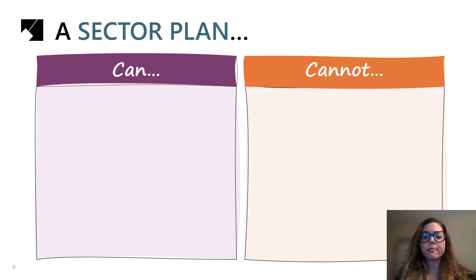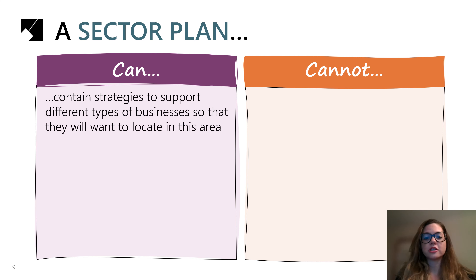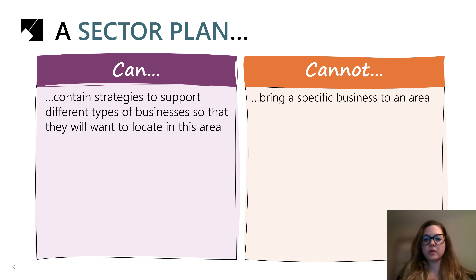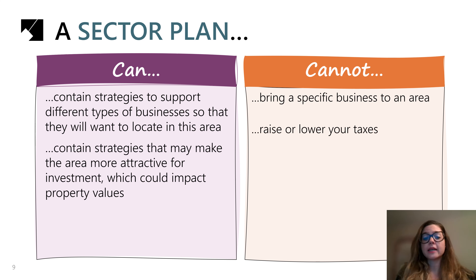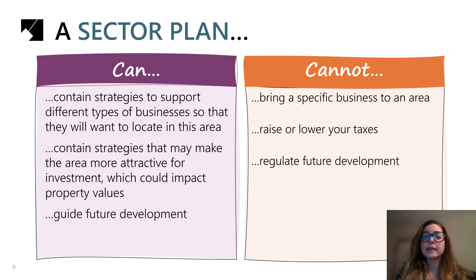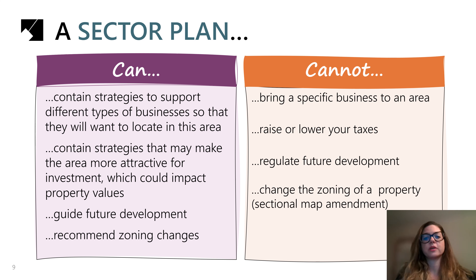A sector plan can contain strategies to support different types of businesses so that they'll want to locate in this area, but it cannot bring a specific business to an area. A sector plan can contain strategies that may make the area more attractive for investment, which could impact property values, but it cannot raise or lower your taxes. A sector plan can guide future development, but it cannot regulate future development. And finally, a sector plan can recommend zoning changes; however, it does not change the zoning of a property. Changes to the County Zoning Map are done by the County Council through a separate process called a Sectional Map Amendment, or SMA, which is the topic of our conversation this evening.